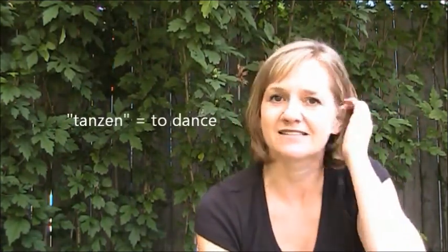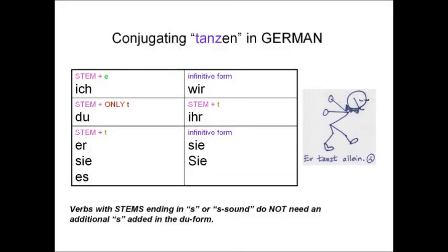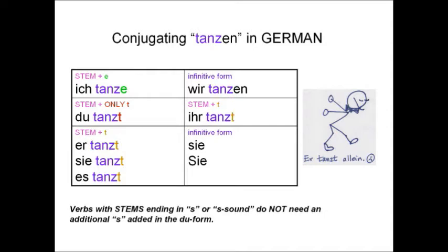Sometimes we have the S sound but it's not an S. Here's the weak verb tanzen — tanzen, of course, means to dance. Ich tanze. Du tanzt. Er tanzt. Wir tanzen. Ihr tanzt. Sie tanzen. Did you see how in the du form I just put the T on there? I didn't even bother adding an extra S because there was already an S sound there.